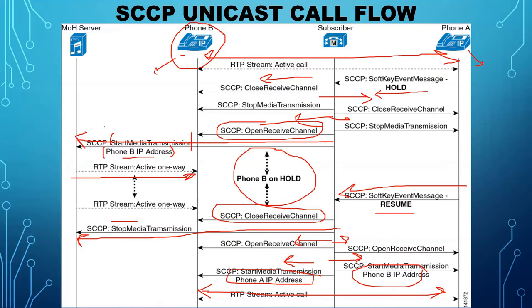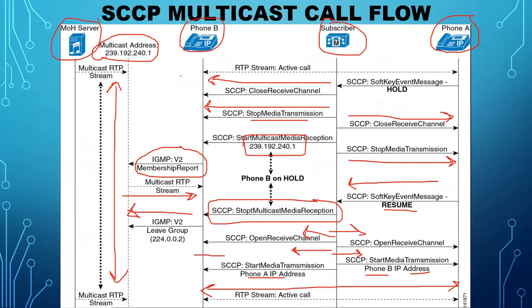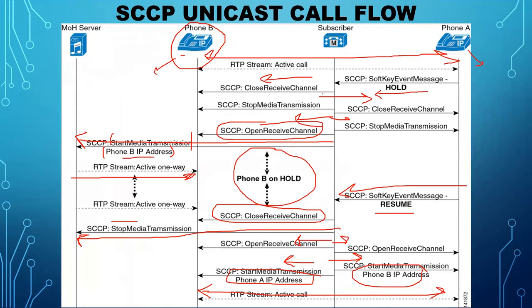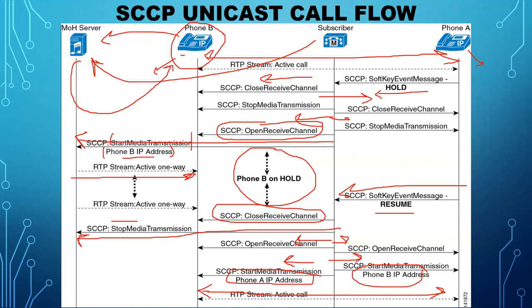To summarize the main difference between unicast and multicast: in multicast, the subscriber tells Phone B the multicast IP address so Phone B reaches out to the multicast stream directly. In unicast, the subscriber reaches out to the MOH server itself and gives Phone B's IP address to the MOH server so that the MOH server can send the RTP stream to Phone B's address.